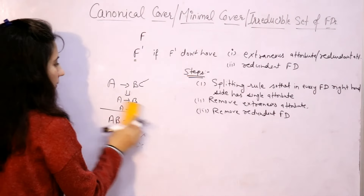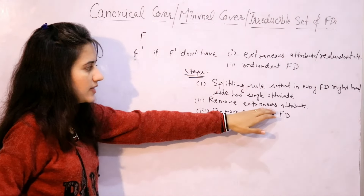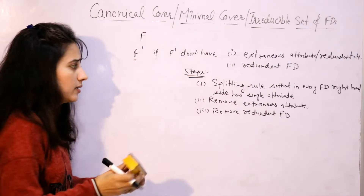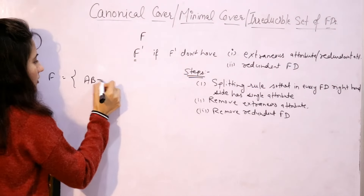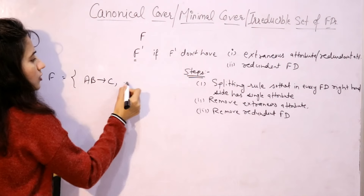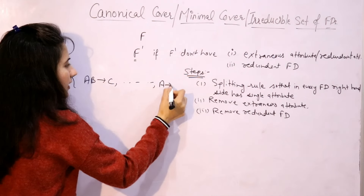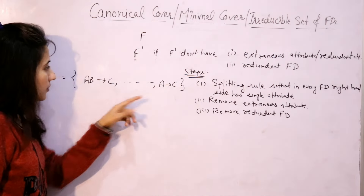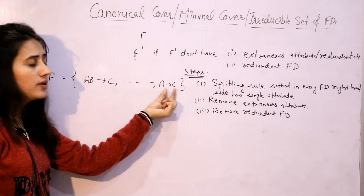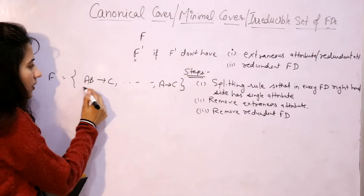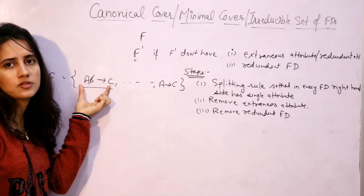These are the three steps. Now, let me discuss what extraneous or redundant attributes are with a proper example. If in a functional dependency set there is AB → C, and some more functional dependencies are given including A → C — here, AB → C and alone A → C — if A alone can derive C, then obviously from AB → C we can remove B, because B is an extraneous attribute.